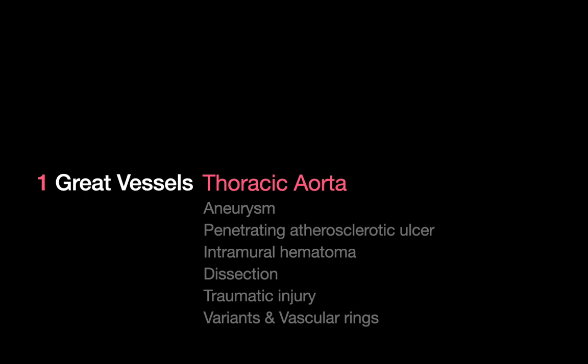Now let's move on to the thoracic aorta. Six thoracic aorta conditions to be familiar with are aneurysms, PAUs, intramural hematomas, dissections, traumatic aortic injury, and a few congenital vascular rings. This section will be a big-picture overview of thoracic aortic disorders that in actuality probably deserve their own dedicated talks.